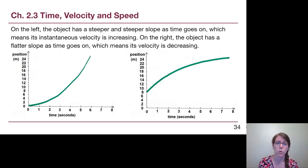On the right, the object has a flatter and flatter slope as time goes on, which means its velocity is decreasing, it is slowing down and nearly stopped by the end of this motion.